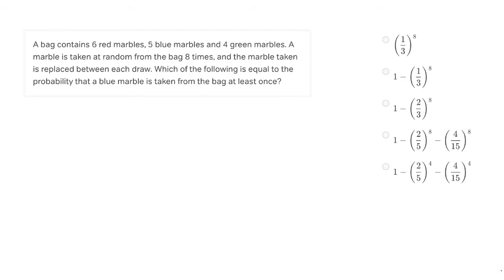Let's try one more example probability question before we move on to permutations and combinations. This problem gives us a bag of marbles and wants us to find the probability that a blue marble is taken from the bag at least once. Once again, we have that clue with 'at least.' We also see 'one minus' in most of the answer choices — an abundance of clues that we want to use our strategy of taking the total probability of one and subtracting the probability of what we don't want. If we want at least one blue marble, the only thing that doesn't work is no blue marbles.